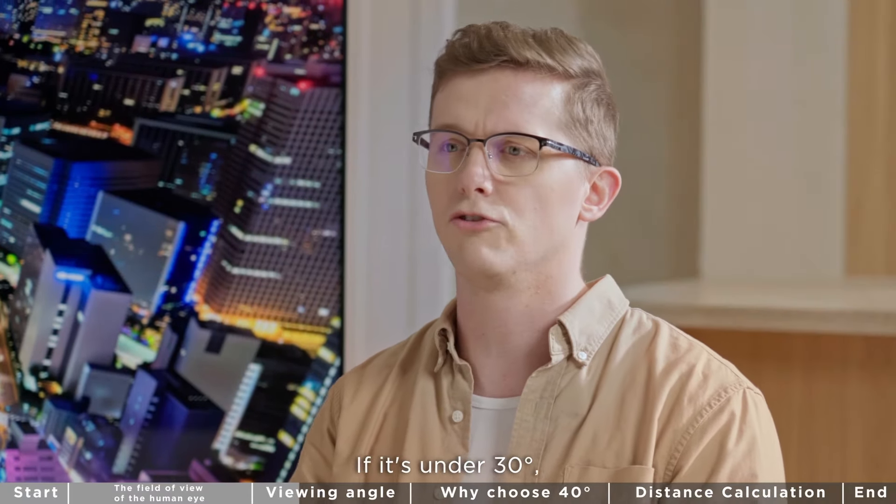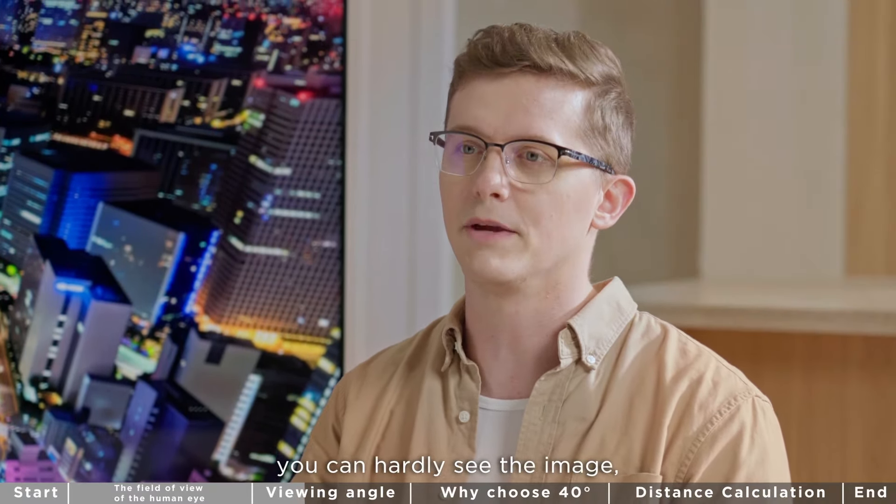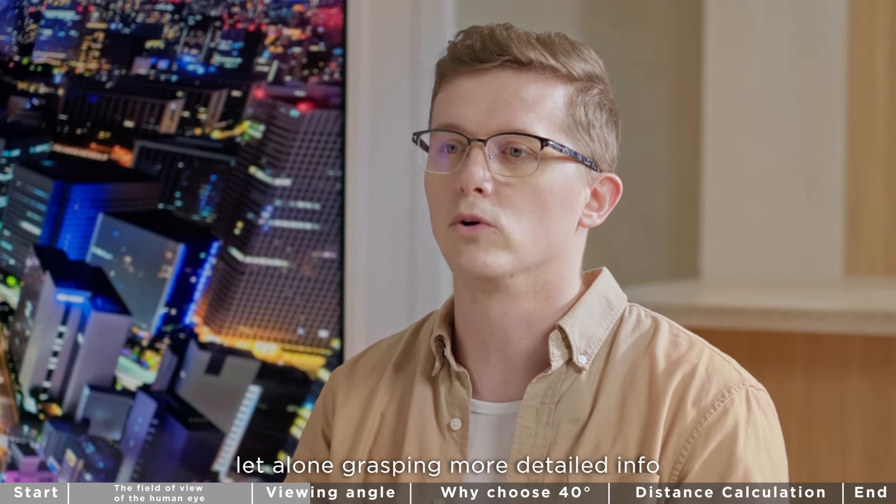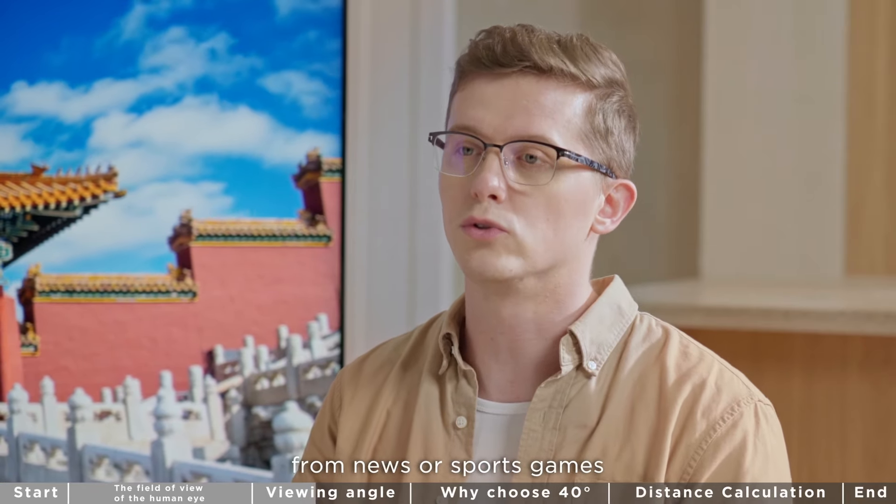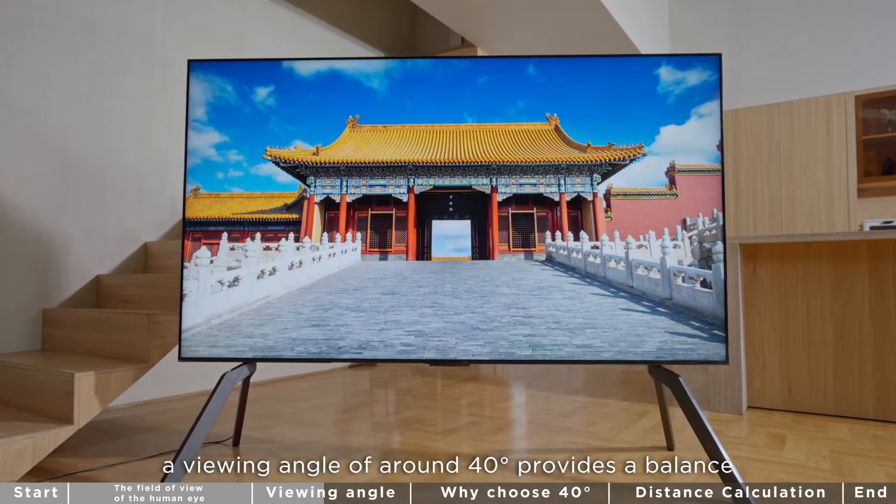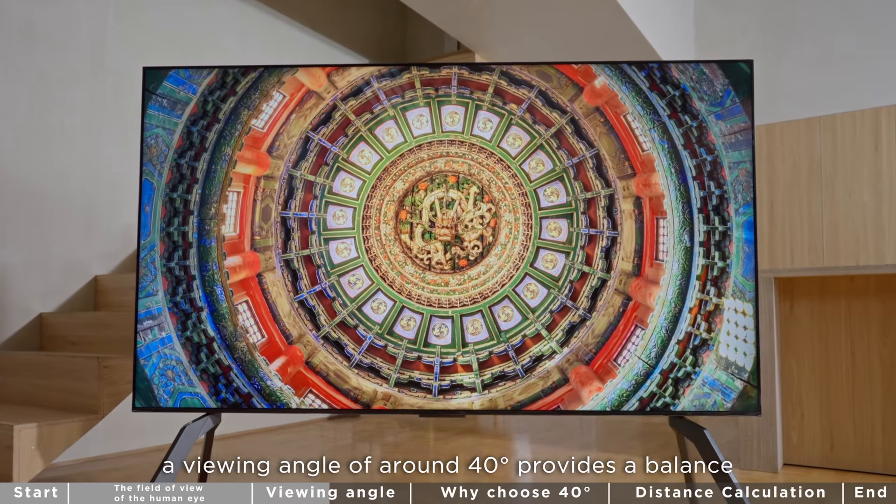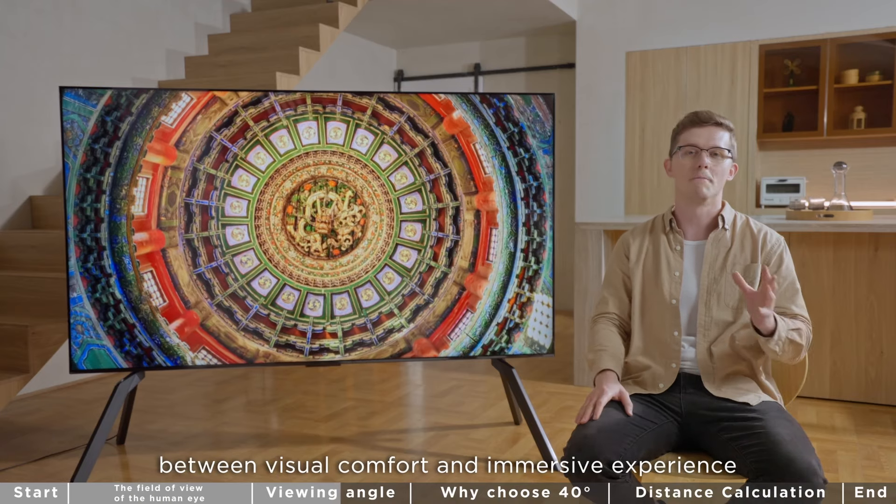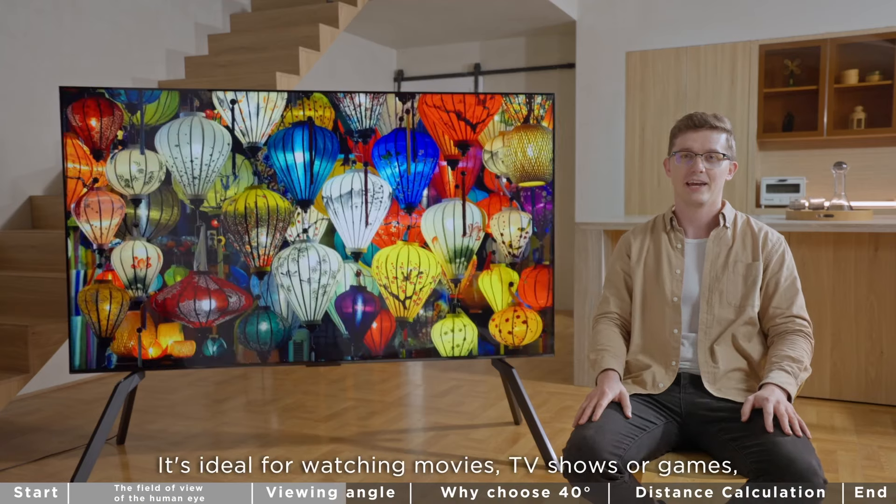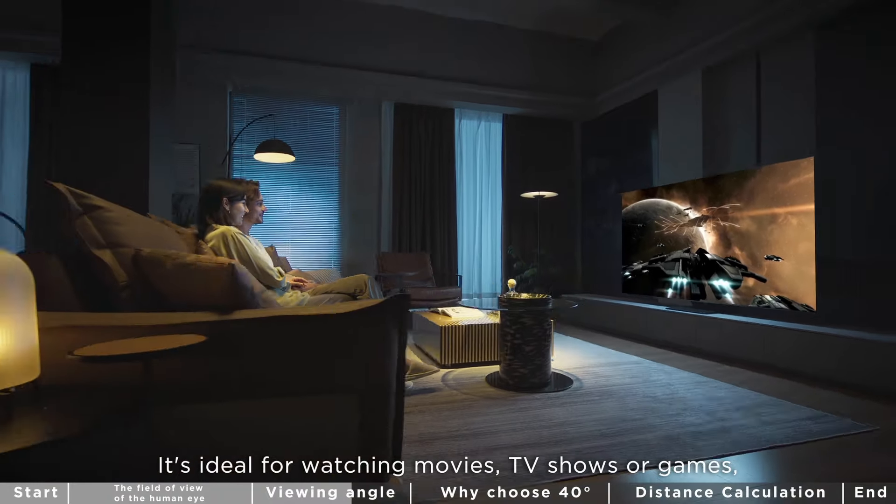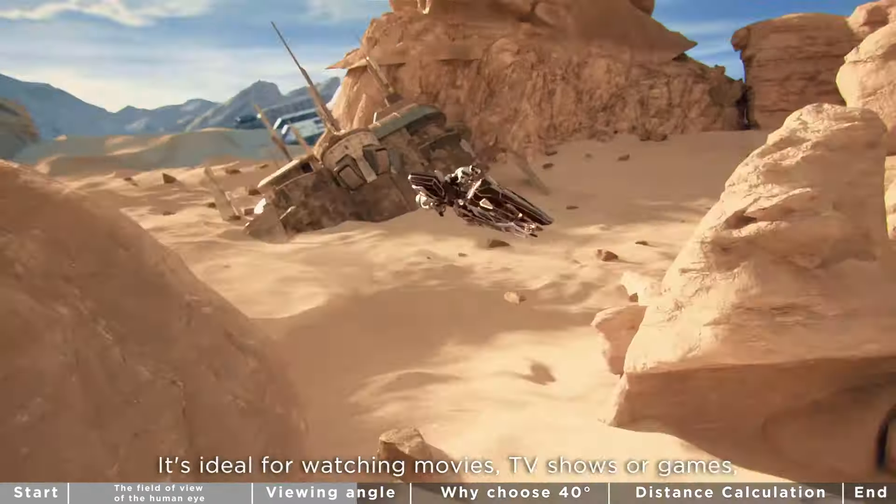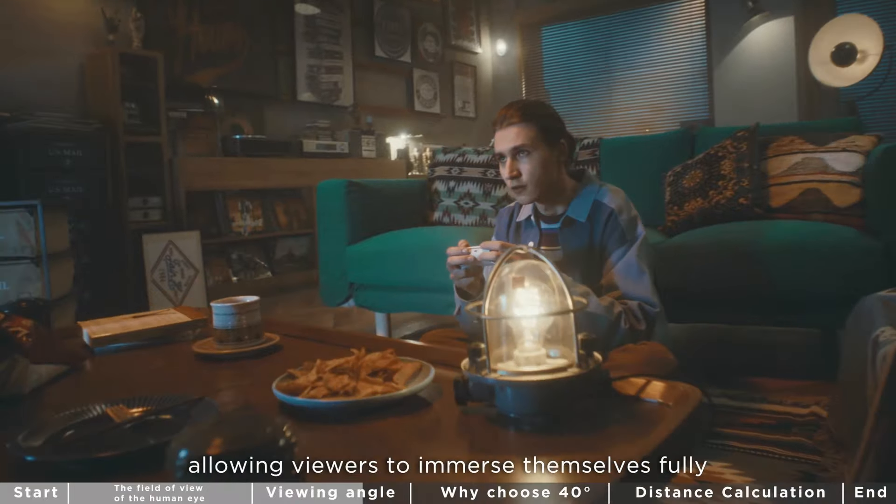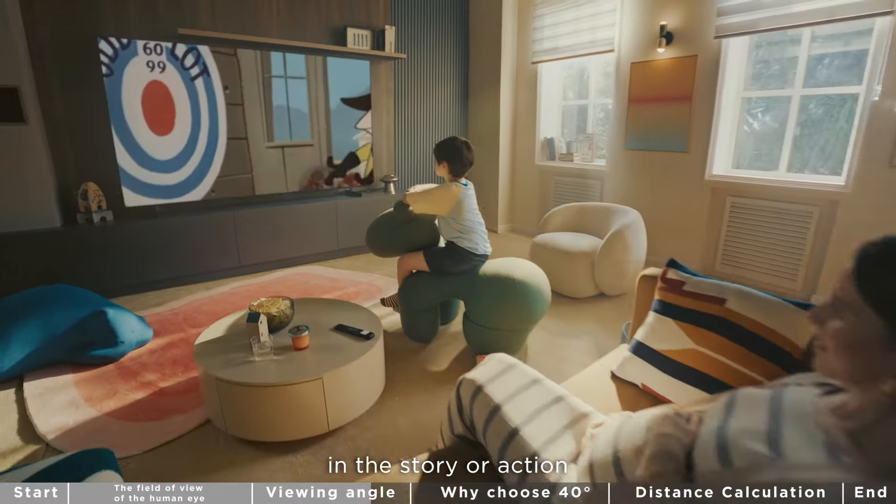If it's under 30 degrees, you can hardly see the image, let alone grasping more detailed info from news or sports games. On the other hand, a viewing angle of around 40 degrees provides a balance between visual comfort and immersive experience. It's ideal for watching movies, TV shows or games, allowing viewers to immerse themselves fully in the story or action.